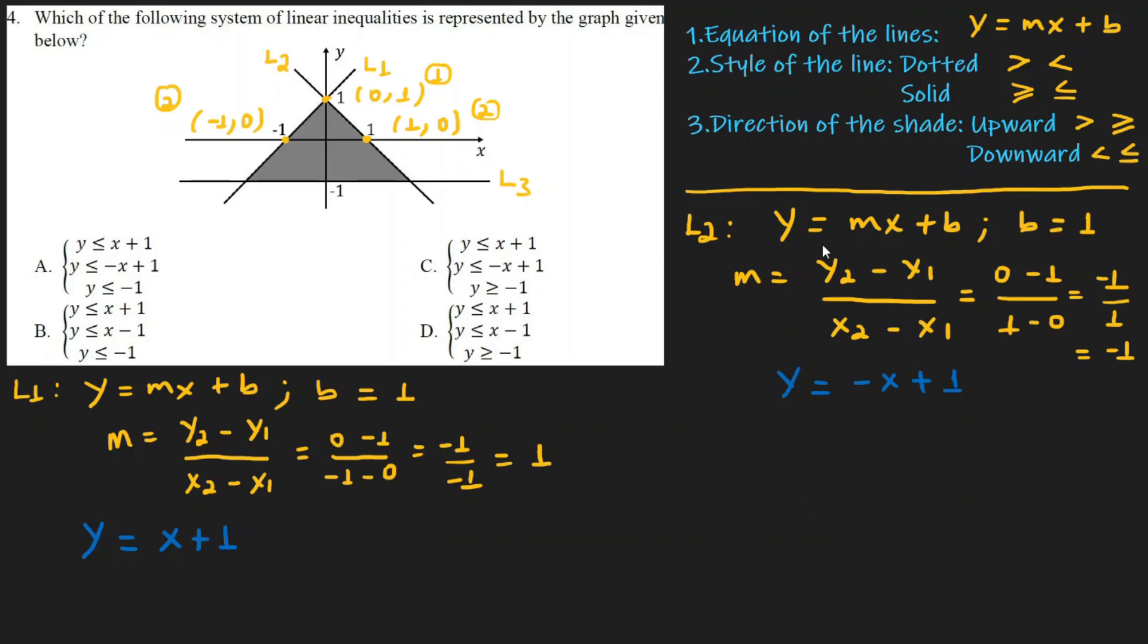For Line 3: y equals mx plus b. Line 3 has y-intercept at minus 1. The line is horizontal, so the slope is 0. Therefore, Line 3 equation is y equals minus 1.